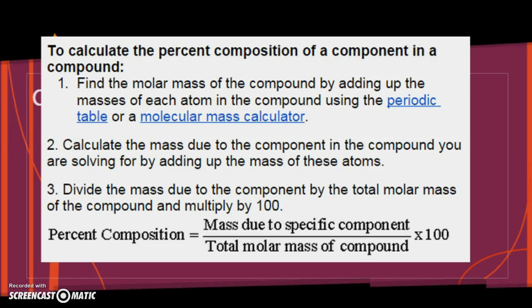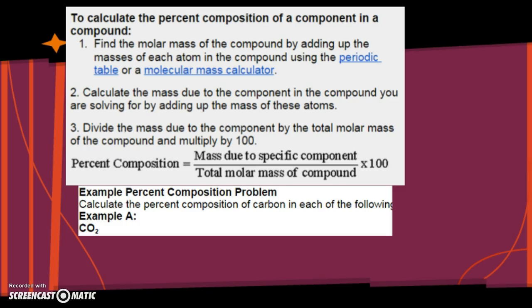Number two, calculate the mass due to the component in the compound you are solving for by adding up the mass of these atoms. Three, divide the mass due to the component by the total molar mass of the compound and multiply it by 100. In other words, simple version is to find the percent composition. Find the mass of specifically what you're looking for, divide it by the total mass of the entire thing times 100 to get a percent. So, let's do some examples.